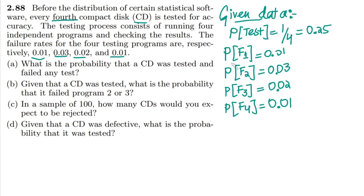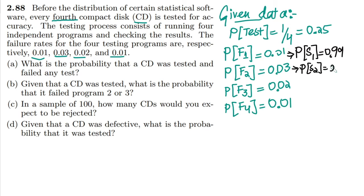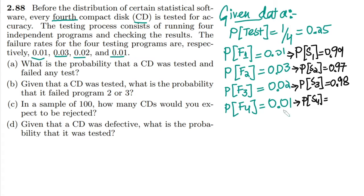We can also find the probability of success in each test. Probability of success in test 1 is 1 minus 0.01, which is 0.99. Probability of success in test 2 is 1 minus 0.03, which is 0.97. Probability of success in test 3 is 1 minus 0.02, which is 0.98. Probability of success in test 4 is 1 minus 0.01, which is 0.99.